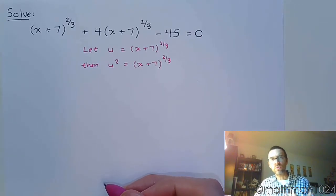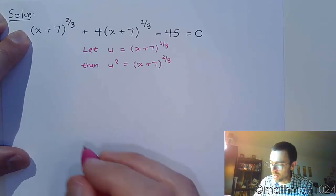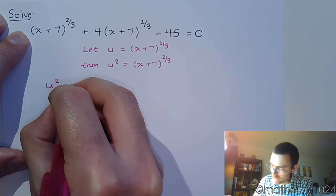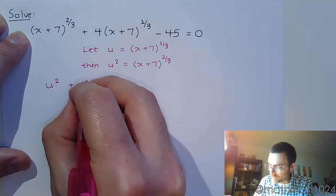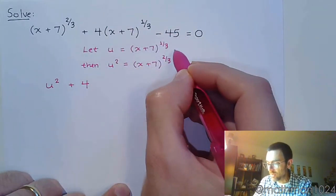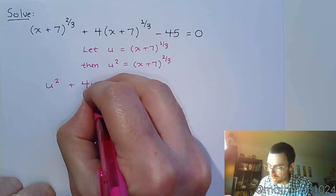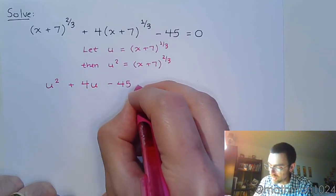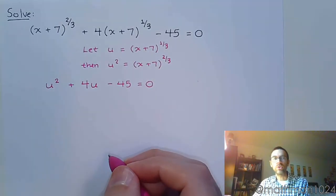And so this allows us to rewrite the problem into something that looks more like a normal looking quadratic because that means this guy right here just becomes u squared plus the 4 is still the 4. But instead of writing this expression, this is what our basic u equals. And then minus 45 equals 0.